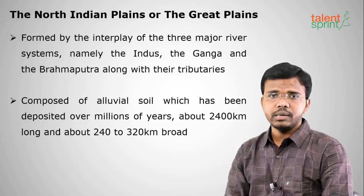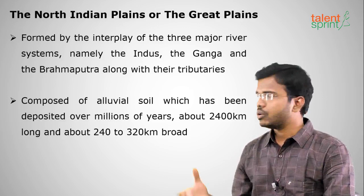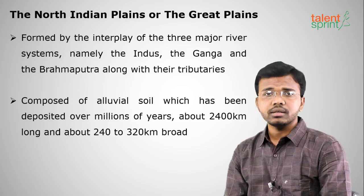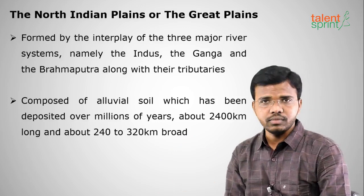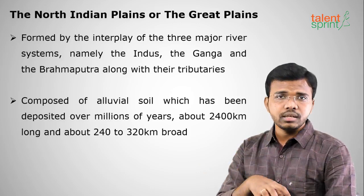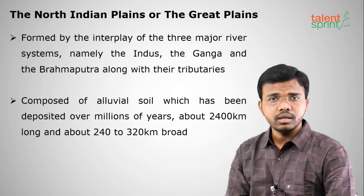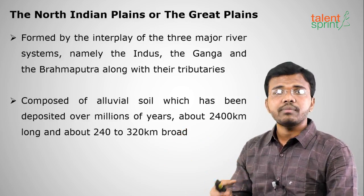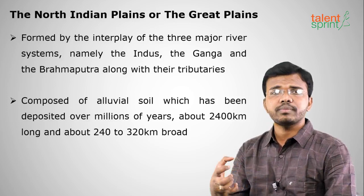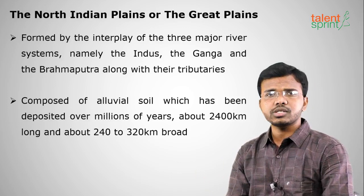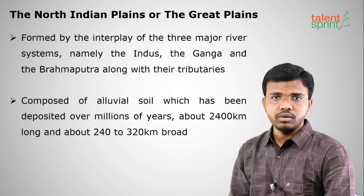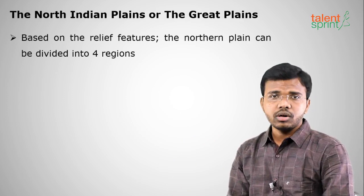The Great Indian Plains are made fertile by the Indus, Ganges, and Brahmaputra rivers. Ancient civilizations like the Indus Valley people settled along these rivers due to water availability. The rivers bring fertile silt, producing alluvial soil — the most fertile soil in India — and the highest cultivated land in India is found here. The North Indian Plains are divided into four regions.